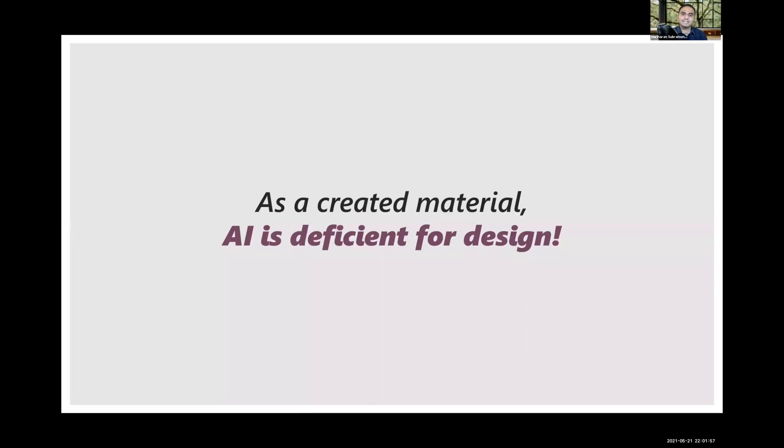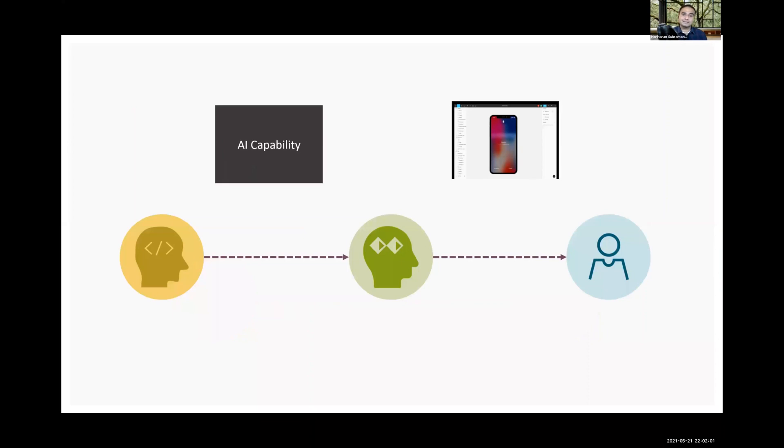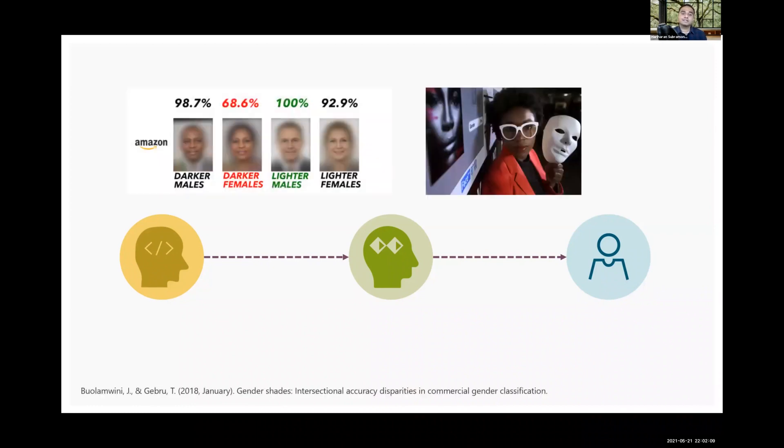However, as a created material, AI is deficient for design. For instance, as seen in the Gender Shades paper, if we discover after the fact that AI does not work for specific subgroups of population, not only are they harmed, but refactoring AI after it is created requires costly reworks.